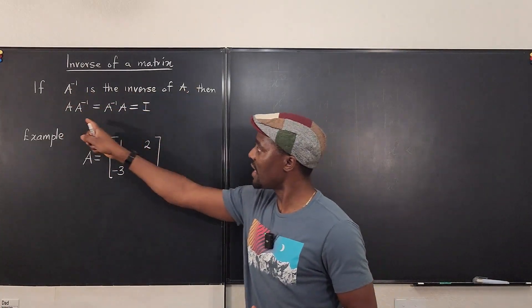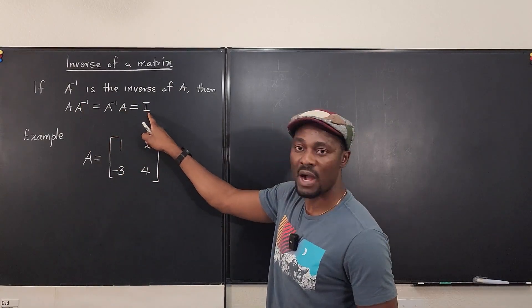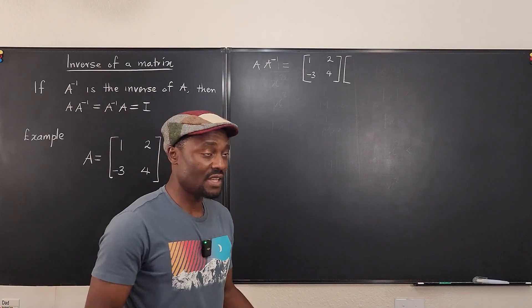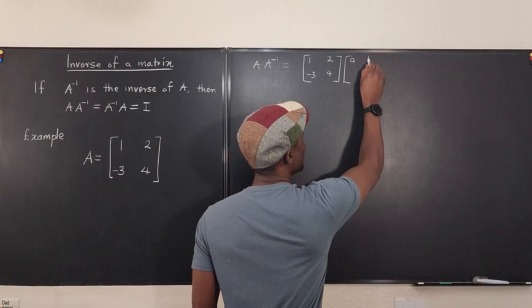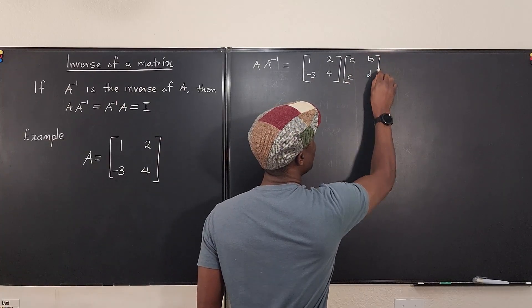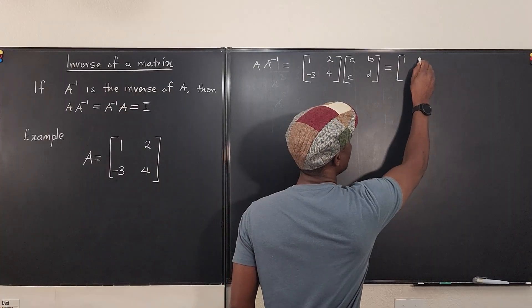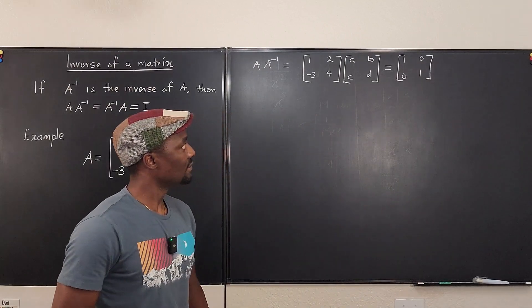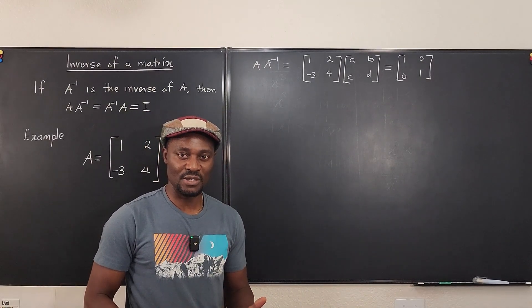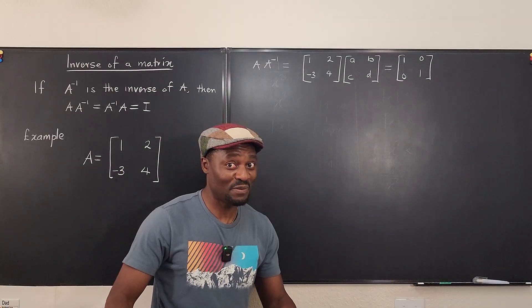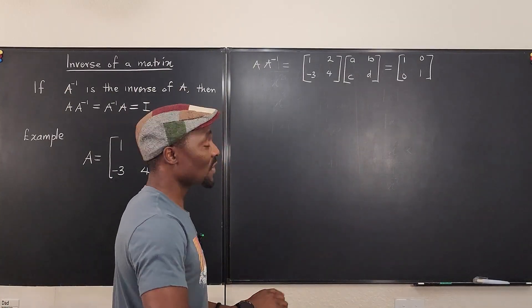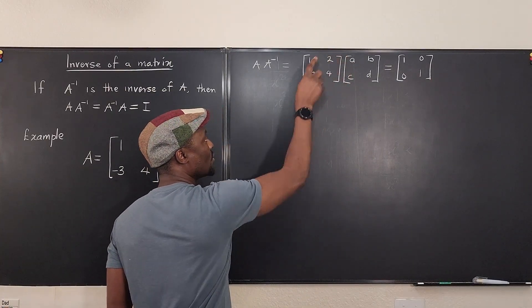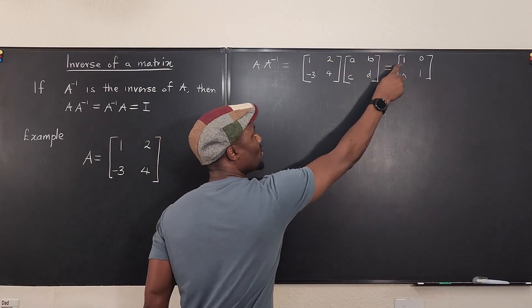Going by the definition that A times A-inverse must equal I, let's see what that looks like. We represent the entries of A-inverse as a, b, c, and d. When we multiply, we take the first row and multiply the first column: 1 times a plus 2 times c.